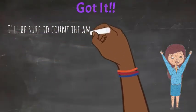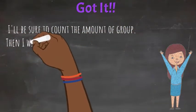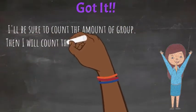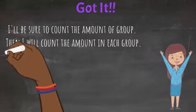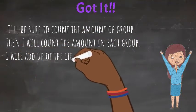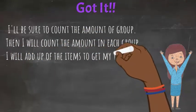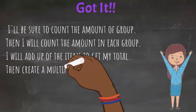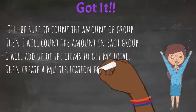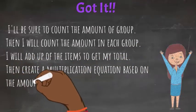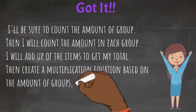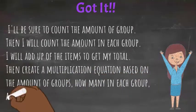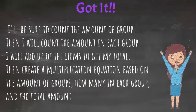Be sure to count the amount of groups, then count the amount in each group, add up all of the items to get your total, and then create a multiplication equation based on the amount of groups, how many are in each group, and the total amount. Great job — thanks for joining me. I'll see you on the next video.